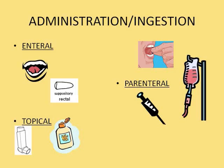Systemic drugs can also be given topically. We're talking about lotions and creams, patches such as some of the contraceptive patches, and patches that people use for heart medication. Another form of topical medication is inhalers, typical of use with asthma.